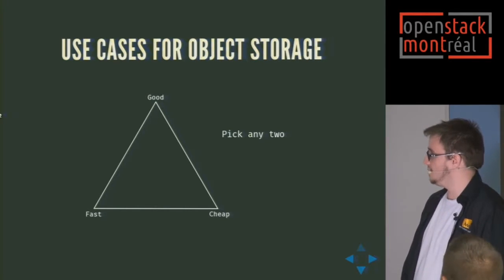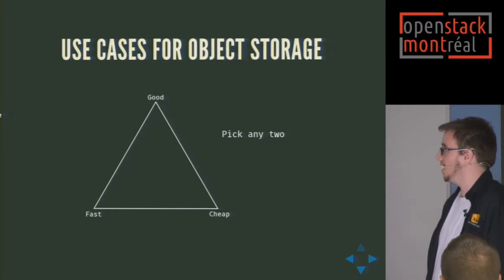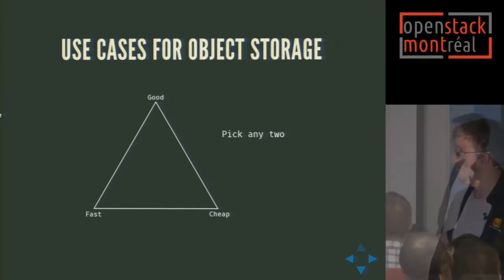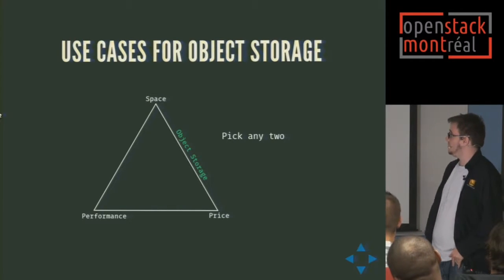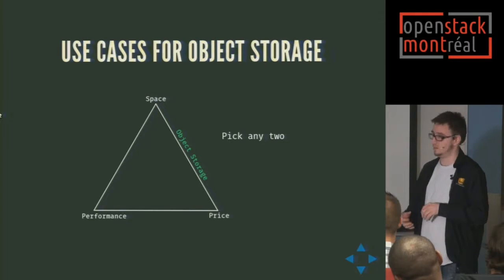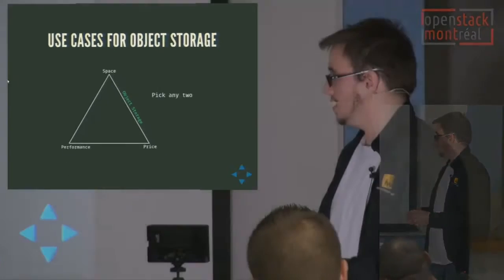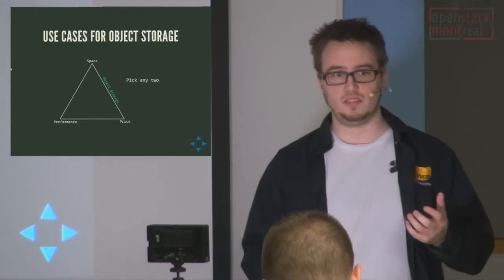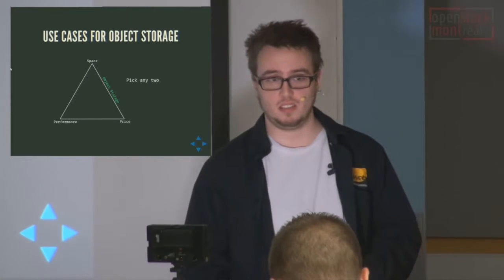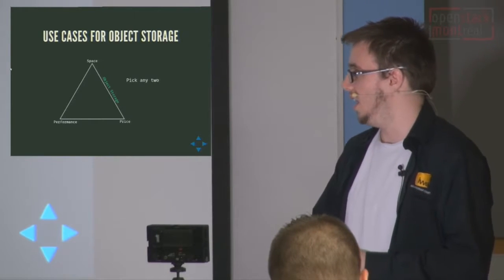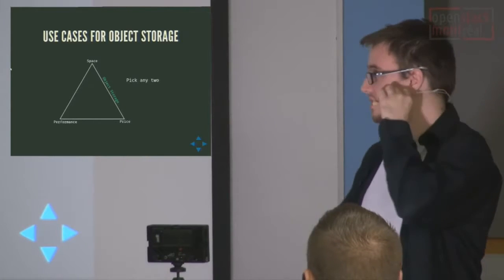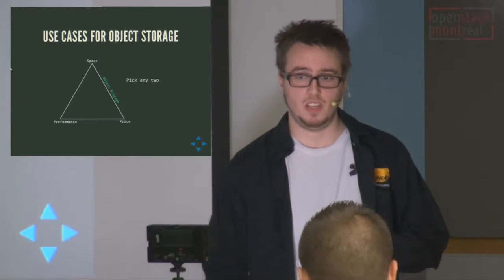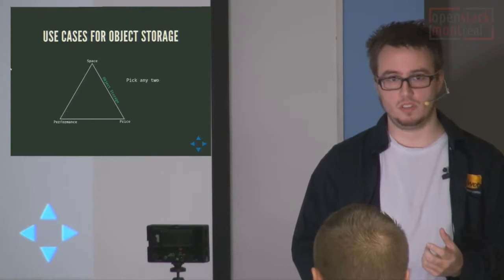So the use case for object storage: you have this triangle — good, cheap, fast — pick any two. As far as storage is concerned, you can have a whole lot of space or a smaller amount of very permanent storage, but there's also price involved. You can have a very expensive SAN — it's going to be awesome, very fast, lots of space if you have the money. Or you can have a lot of space for just a little bit of money, and that's what object storage is about.